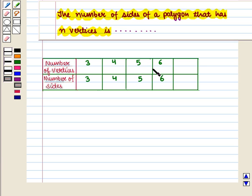Now looking at all these cases, we can find the number of sides of a polygon having seven vertices without actually drawing it. So we say that a polygon with seven vertices has seven sides.